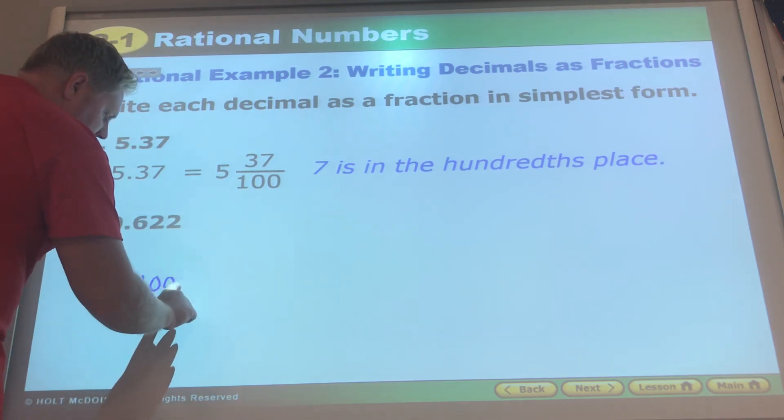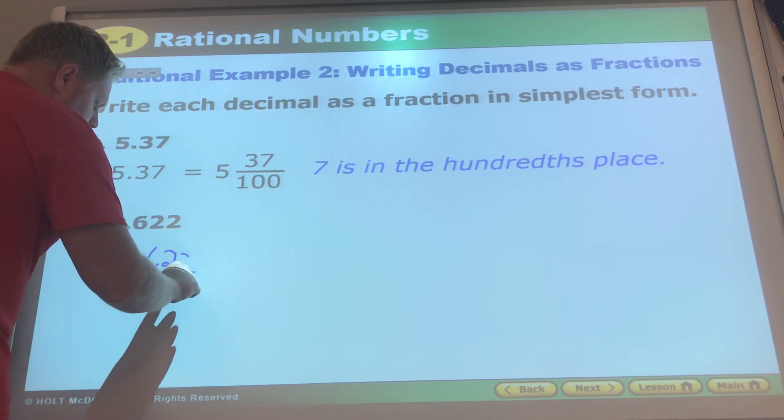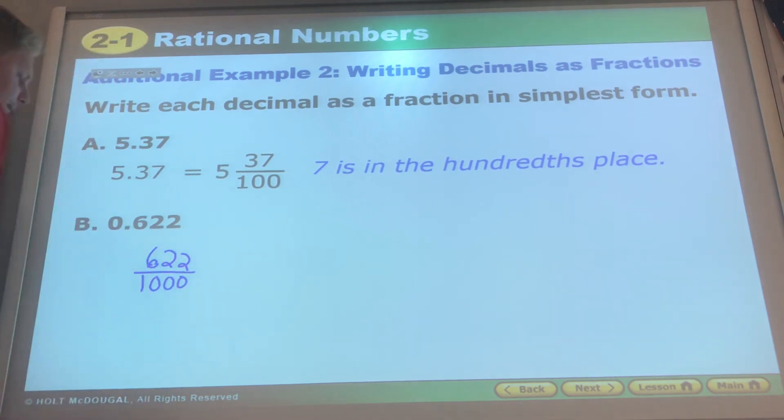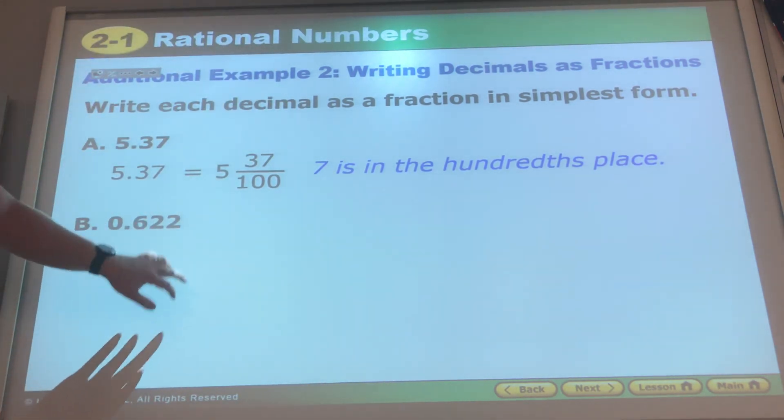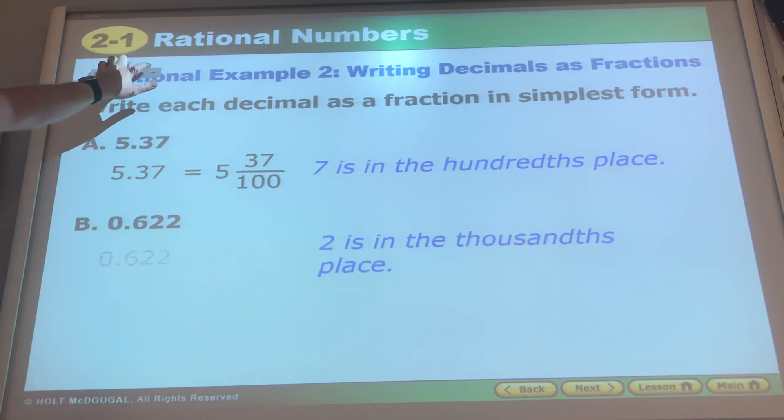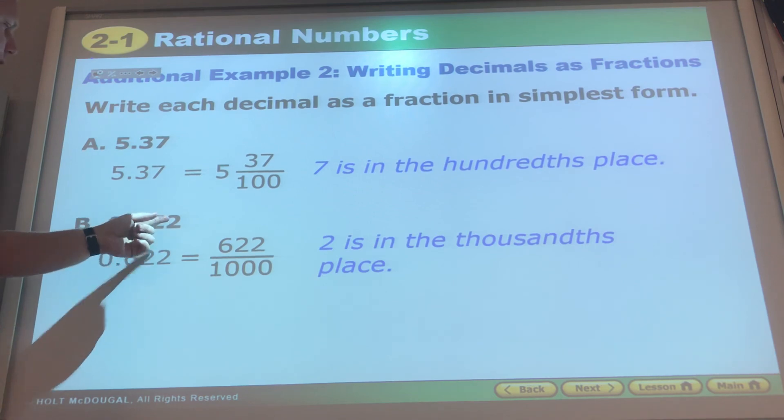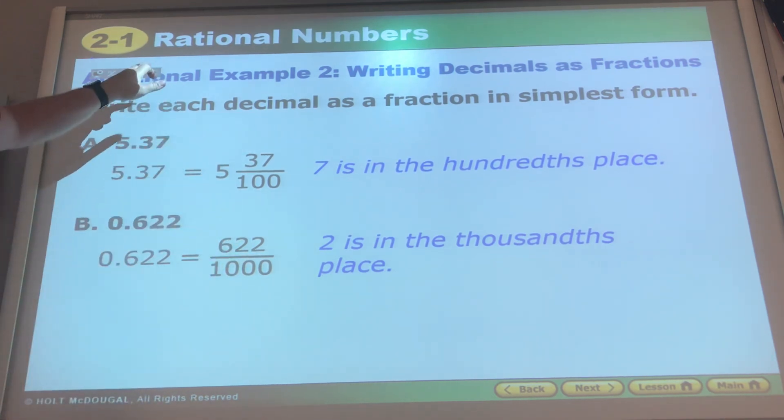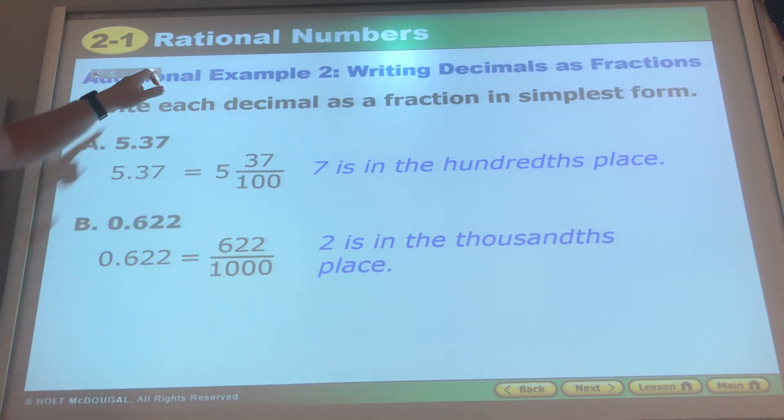So if you say the number how it's supposed to be with those place values, it will tell you literally what to do. 622 thousandths, that's where you get the thousand. 5 and 37 hundredths, that's where you get the 100.